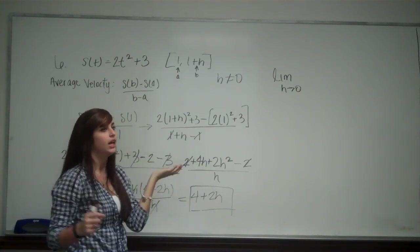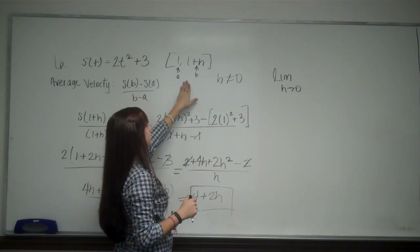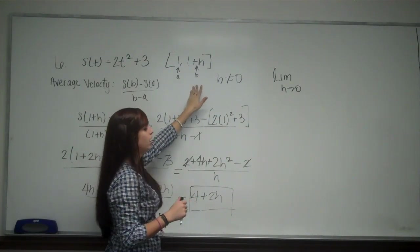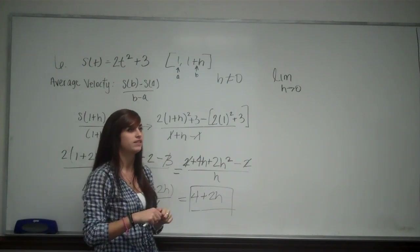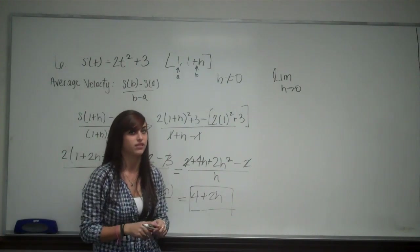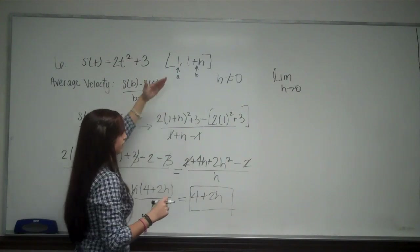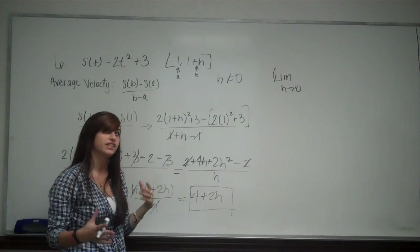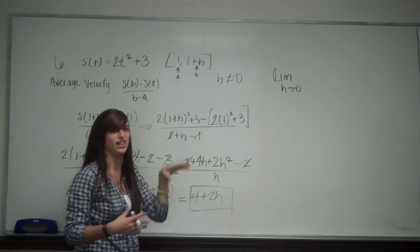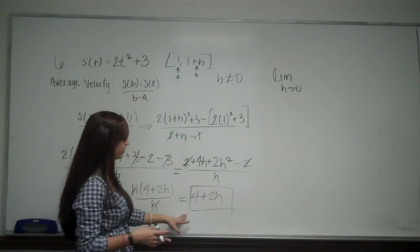In the original, if they gave you, say, 2 to 2 plus h, whenever you got your average velocity equation, that would be correct. But then, if they said find the instantaneous velocity after 1 second, you'd have to do all this over again and do it from 1 plus h to 1. But because they already gave us 1 plus h to 1, they made it a little easier on us. So we have our equation.